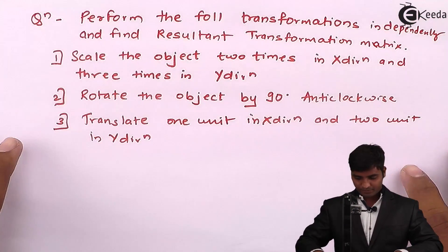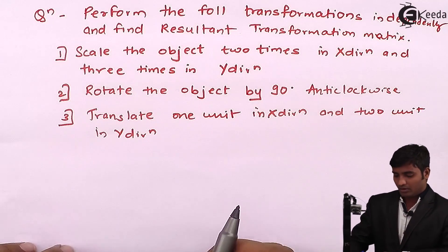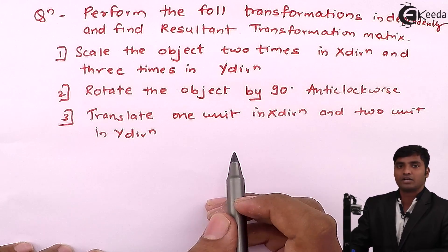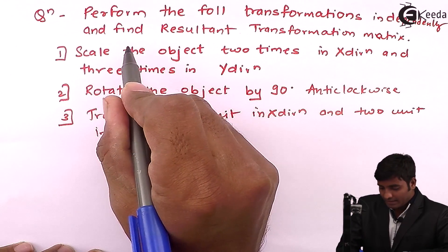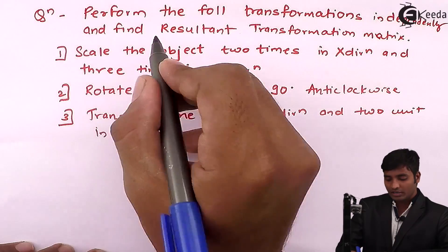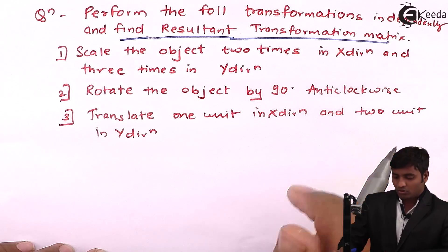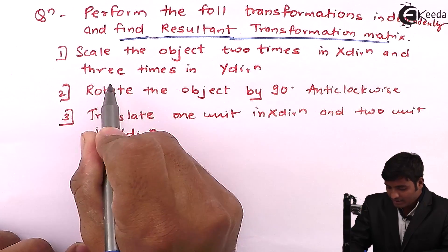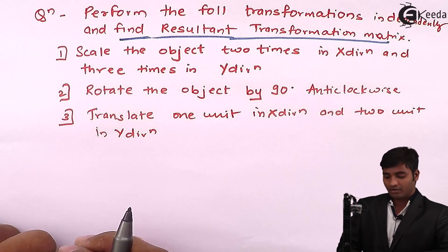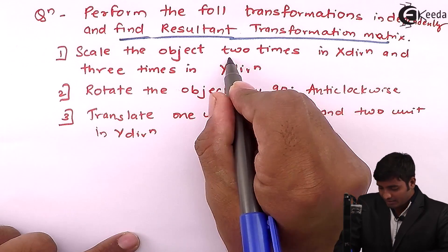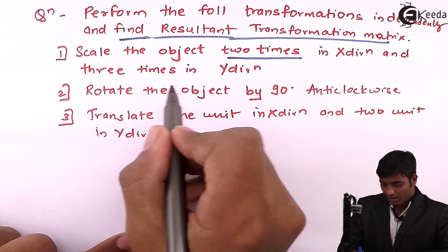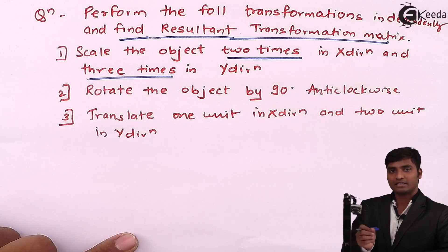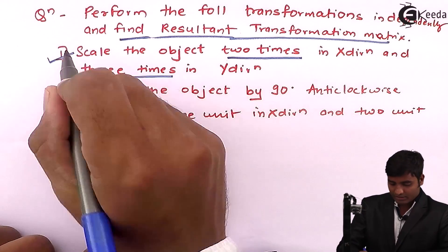In this video we will solve a problem based on general transformation. We have to perform the following transformations independently and find the resultant transformation matrix. The first transformation is scaling the object two times in the x direction, where sx equals 2, and three times in the y direction, where sy equals 3.